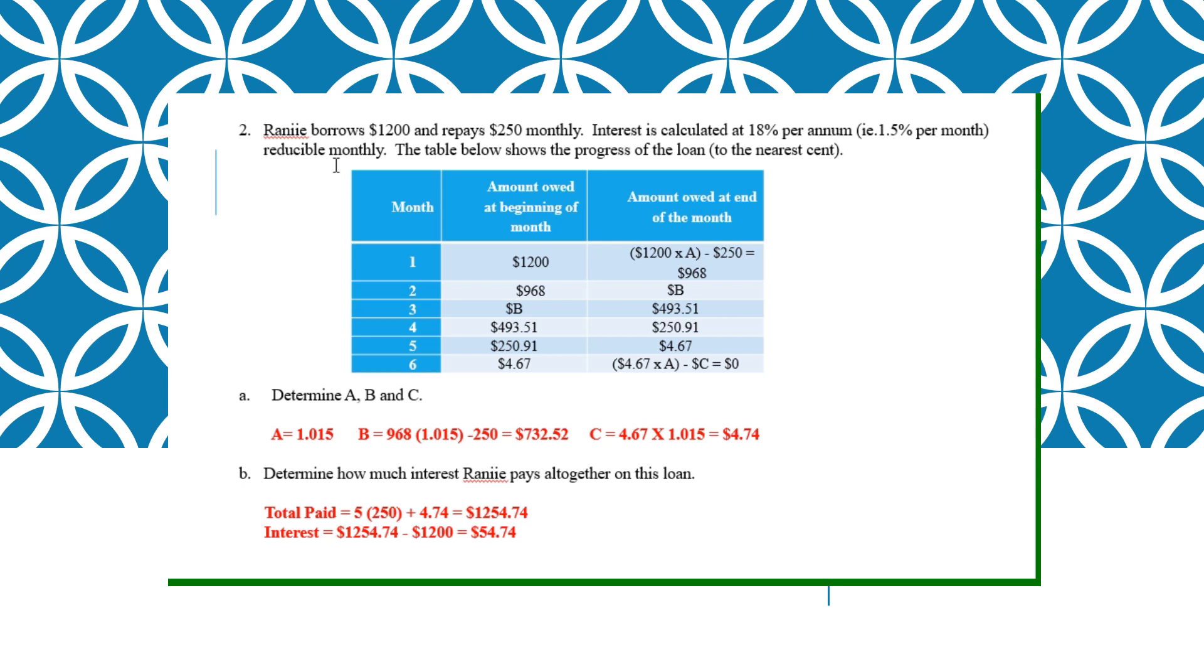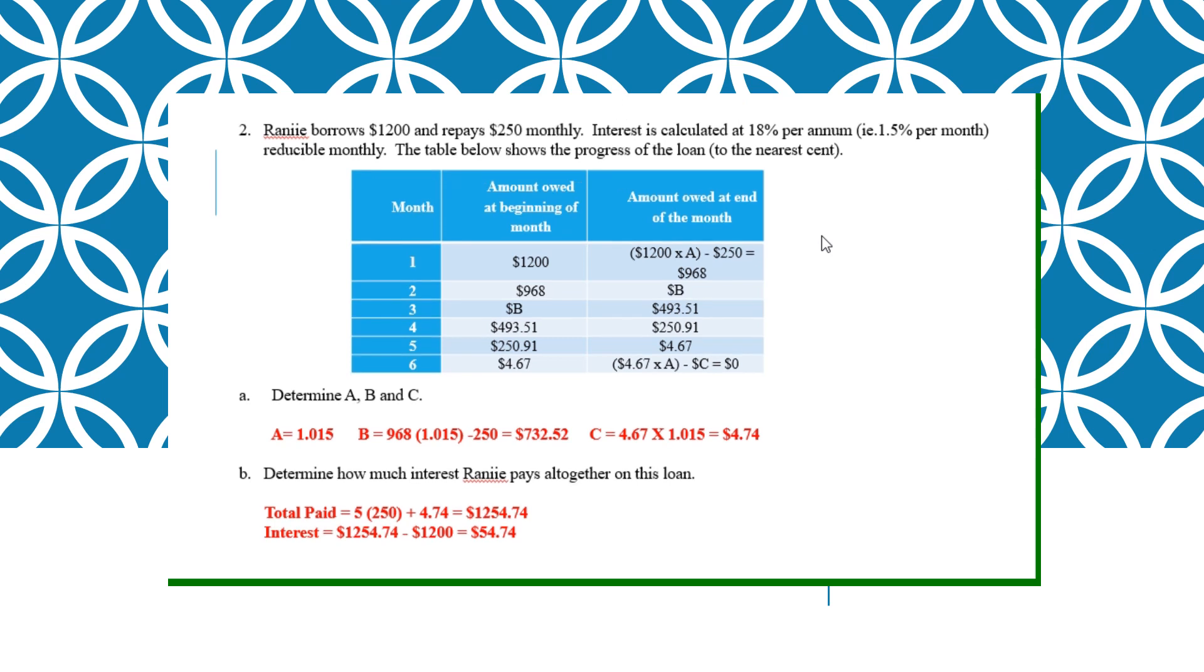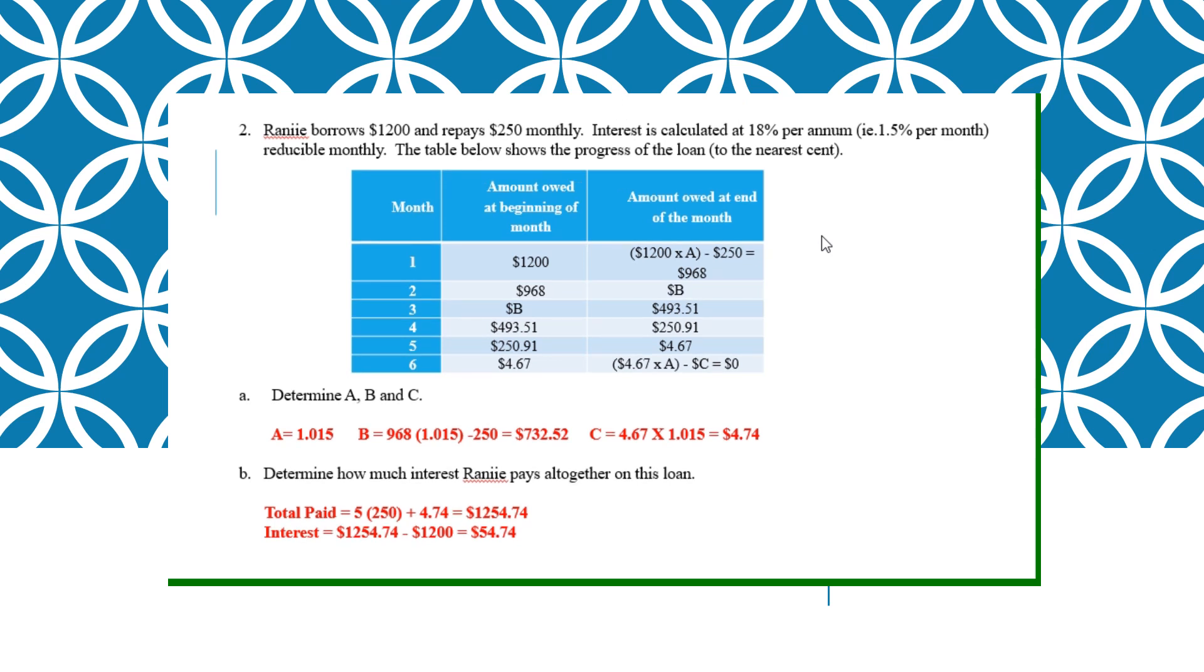So the second one, Rani borrows $1,200, repays $250 monthly. This is what I need you to see: $250 monthly. So your interest rate here is always 18% per annum, per annum is per year. So meaning monthly is 1.5% per month.